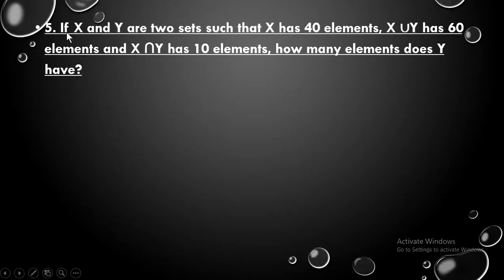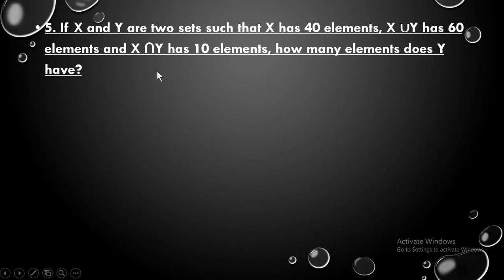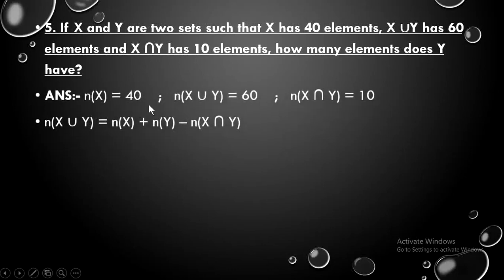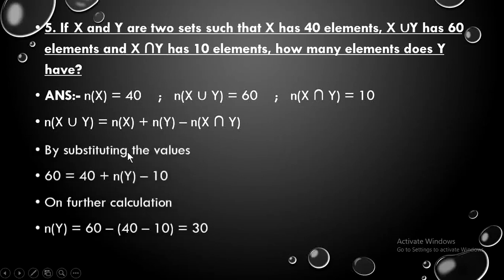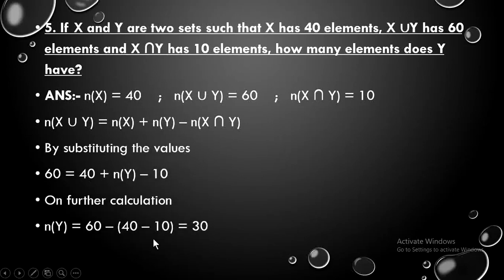The fifth question: if X and Y are two sets such that X has 40 elements, X union Y has 60, and X intersection Y has 10 elements, then how many elements does Y have? Make a list of the given values, write the formula, substitute, and on further calculation you get the answer — the number of elements of Y is 30.